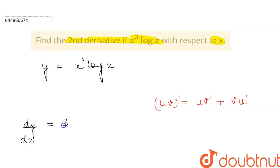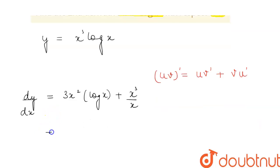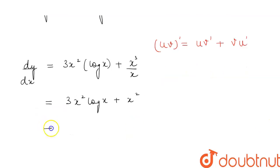differentiating x³, we get 3x² · log x plus x³ · (1/x). So from here we get this to be equal to 3x² log x + x². If we take x²